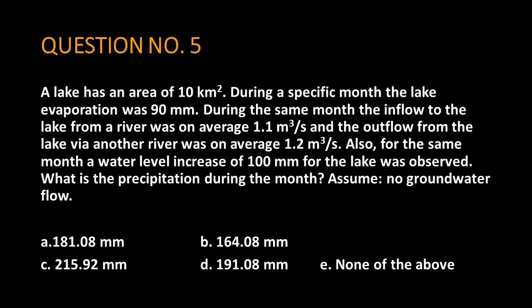Question number 5. A lake has an area of 10 square kilometers. During a specific month the lake evaporation was 90 millimeters. During the same month the inflow to the lake from a river was on average 1.1 cubic meters per second, and the outflow from the lake via another river was on average 1.2 cubic meters per second.